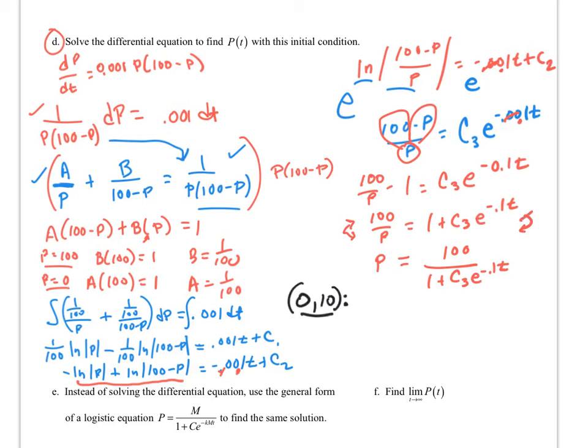So I have my initial condition of 10 grizzly bears. So if I want to find a particular solution for this, this is going to be 10 is equal to 100 all over 1 plus c3 e to the negative 0.1, and my t then is 0, which is just 1. So I need 10 from 100 divided by what number? Well, that's going to be 10. So c3 would be equal to 9. So finally, my particular solution is going to be p is equal to 100 all over 1 plus 9e to the negative 0.1t. I hope you all found a lot of enjoyment out of that.